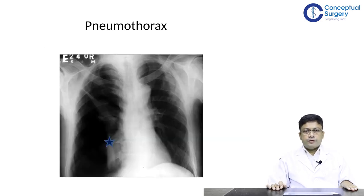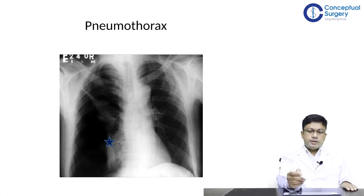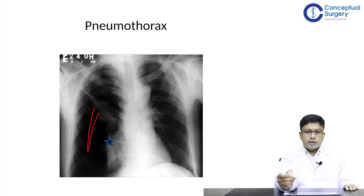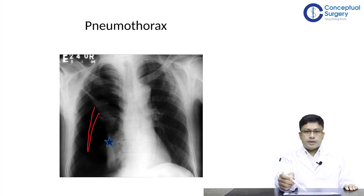We will now go through slides emphasizing the importance of evaluating patients with a chest X-ray before the procedure. Here is an X-ray where on the right side there is a translucent area devoid of lung markings — this is a pneumothorax on the right side. On the left side, lung markings can be seen to the periphery. The collapsed lung is marked with a star.